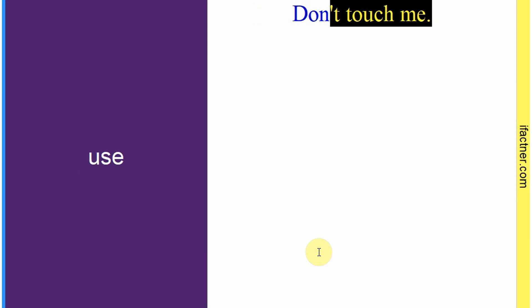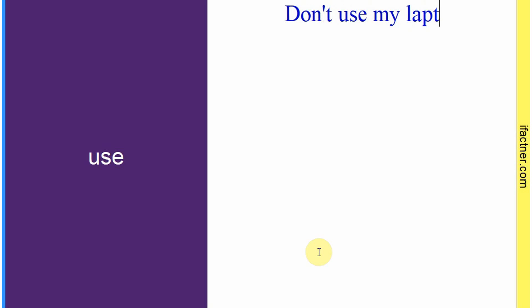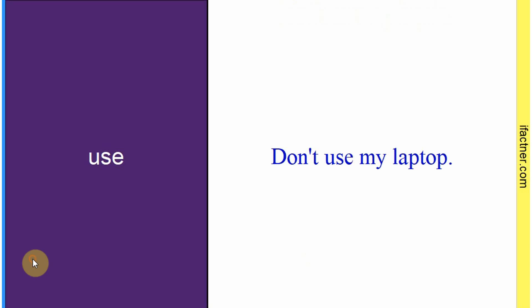Word hai: 'use'. Sentence: 'Don't use my laptop.' Mera laptop istamal na karo. Toh 'use' ka matlab hota hai 'istamal'. Sentence banaaya: 'Don't use my laptop.'